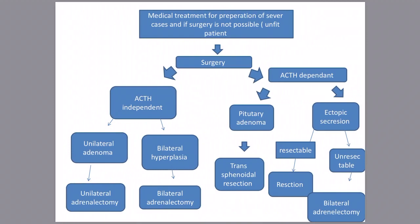For ACTH-dependent Cushing's syndrome caused by a pituitary adenoma, surgery is performed via endoscopic transsphenoidal resection of the pituitary adenoma. If ACTH secretion is from a resectable ectopic malignant tumor elsewhere, resection will suppress ACTH and cure the hormonal disturbance. If the ectopic tumor is unresectable, bilateral adrenalectomy is performed to remove the target organ of ACTH hypersecretion.